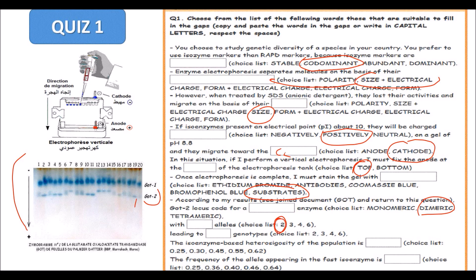These alleles will give genotypes. Leading to how many genotypes? Two, three, four, six? They give rise to three genotypes: AA, BB, and AB like here. They are heterozygotes here. The isozyme-based heterozygosity of this population - what is the heterozygosity? It is simply the number of heterozygotes on the total number of the individuals, which are 20 individuals. The calculation will give 0.45 as heterozygosity of this population.